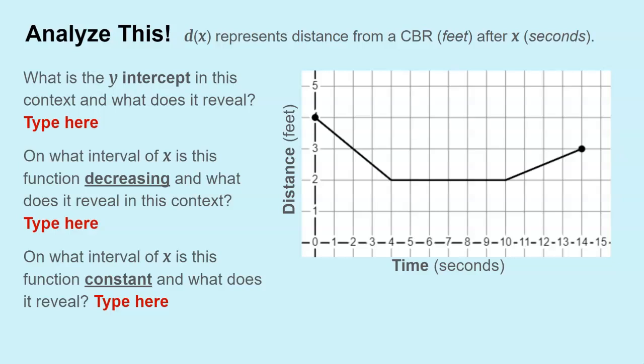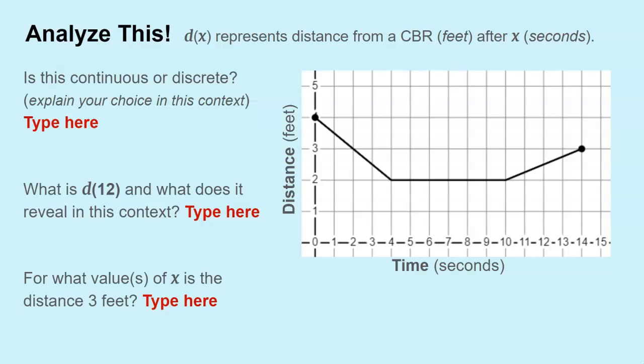Then the y-intercept, where is this graph decreasing and what does that reveal about the person in this context, the CBR, the movement. And then finally what is the constant, or is it constant, what is the distance not changing. And then is this a continuous or discrete graph. Obviously the graph is continuous, but the question is should it be continuous, and if it is continuous, why? Explain the choice in this context.